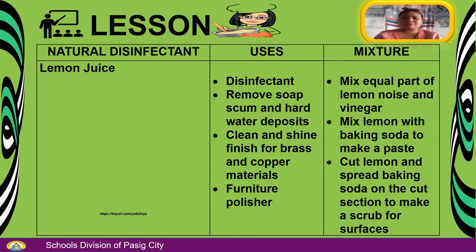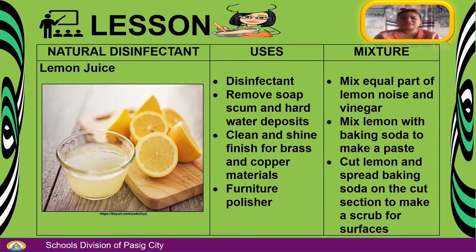Next is lemon juice. It can be used as a disinfectant, to remove soft scum and hard water deposits, to clean and shine brass and copper materials, and as a furniture polisher. For the mixture, mix equal parts of lemon juice and vinegar, or mix lemon with baking soda to make a paste. You can also cut a lemon and spread baking soda on the cut section to make a scrub for surfaces.